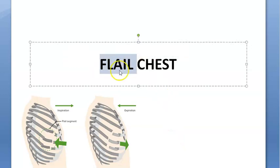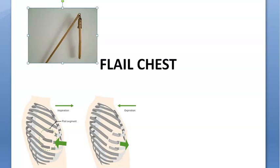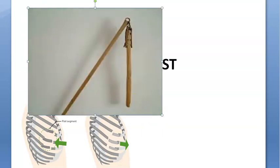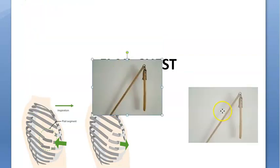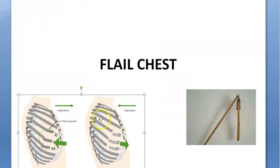Let's look at flail chest. What do you exactly mean by this word 'flail'? Flail actually means this kind of equipment — it looks like a broken stick. So flail chest means the ribs are broken. Let's look at this image here.